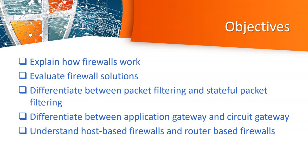By the end of this chapter, please make sure you are able to explain how a firewall works, what a firewall is, what type of firewall is suitable for your situation and organization, and how to evaluate firewall solutions. We will differentiate between four types of firewall: packet filter firewall, stateful packet inspection, circuit level inspection, and application gateway firewall.